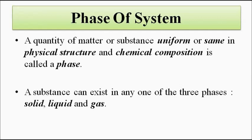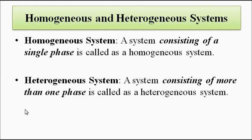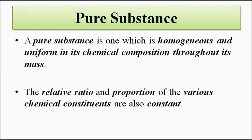We also need to understand homogeneous and heterogeneous systems, as these are used in defining a pure substance. A homogeneous system consists of a single phase — only one phase. A heterogeneous system consists of more than one phase.